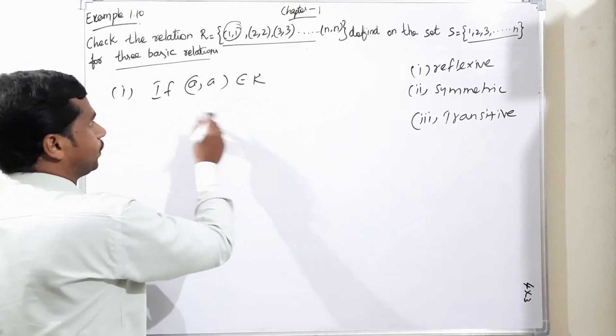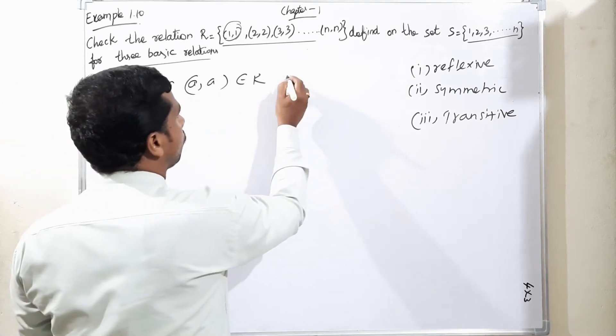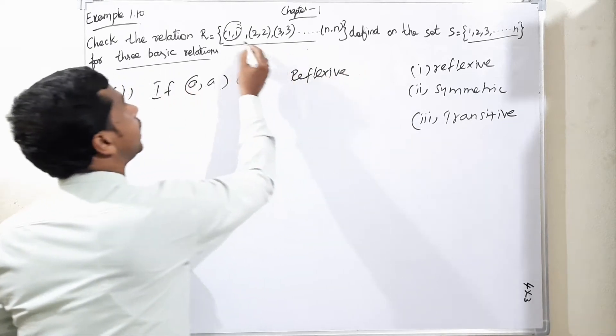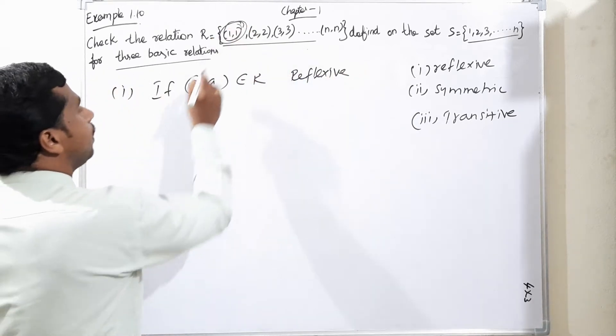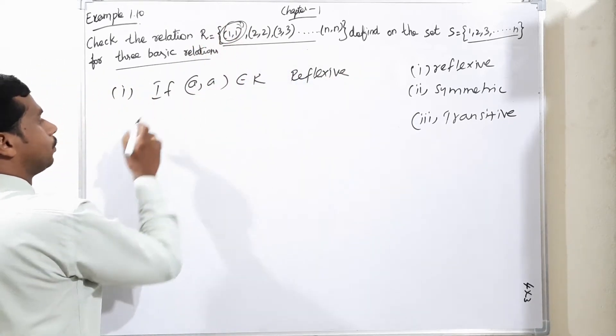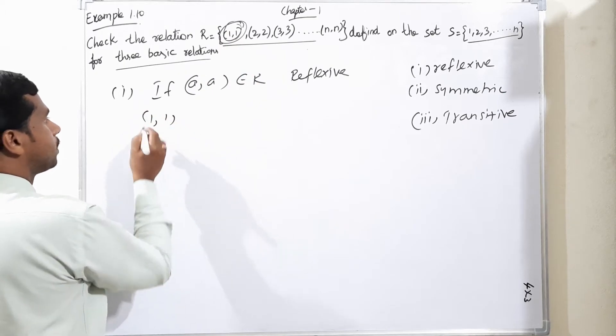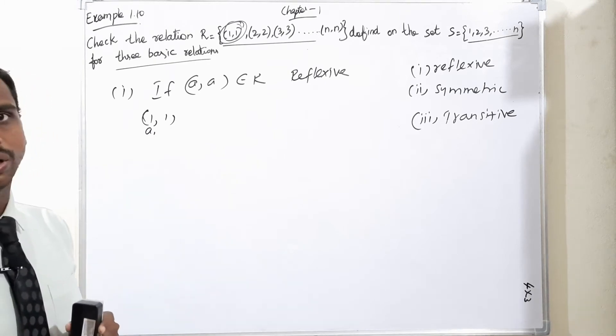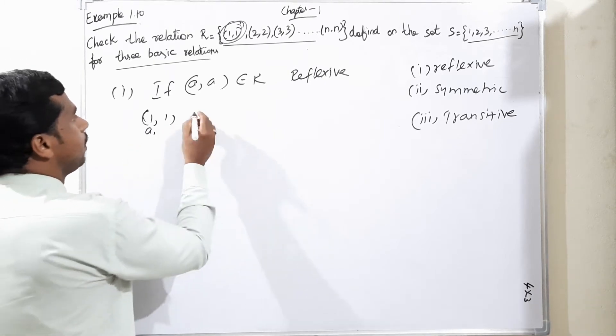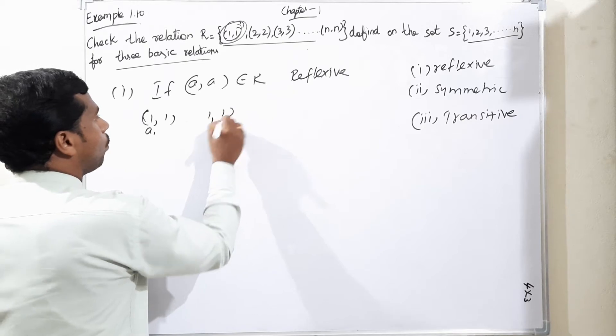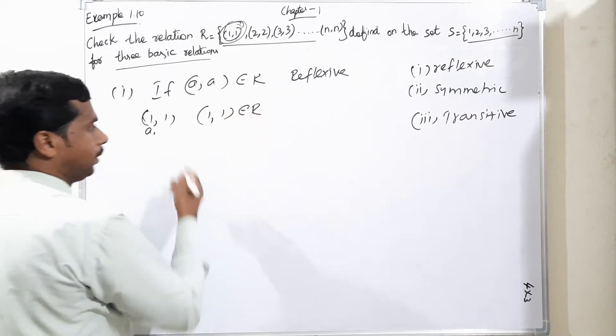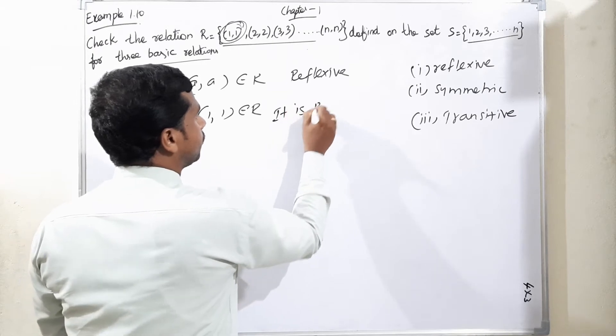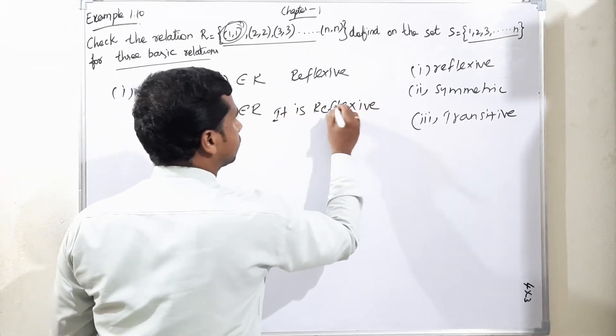It means it is called reflexive. I am checking the first set. The first set is (1,1), meaning if we consider a equals 1, then (1,1) belongs to R. If it belongs to R, it is reflexive.